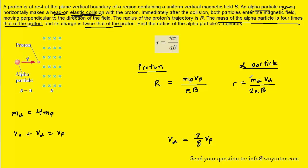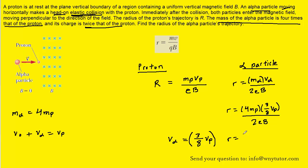We now make substitutions: the mass of the alpha particle is four times the mass of the proton, and the final velocity of the alpha particle is three-eighths the final velocity of the proton. Substituting these in, the numerator has 4·M_p times (3/8)·V_p, and the denominator has 2·e·B. Multiplying four by three-eighths and dividing by two gives 3/4. What remains is M_p times V_p divided by e times B, which is identical to the expression for the proton's radius R.